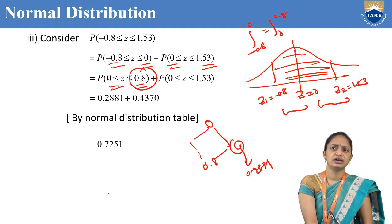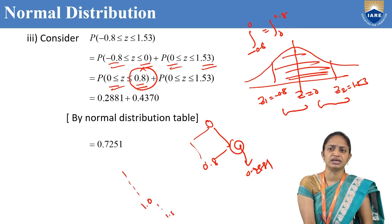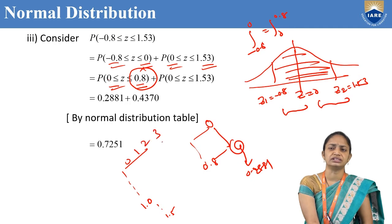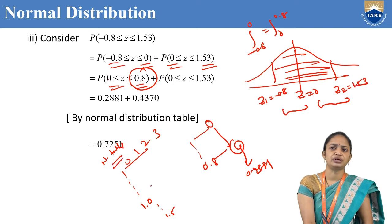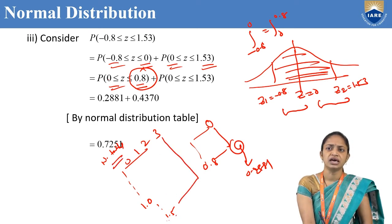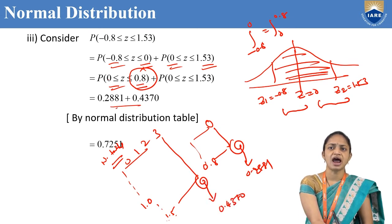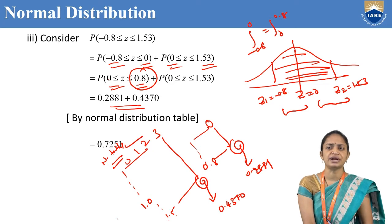From the normal distribution table, look up 1.5 with column 3, giving 0.4370 for the area from 0 to 1.53. Adding 0.2881 and 0.4370, we get 0.7251.